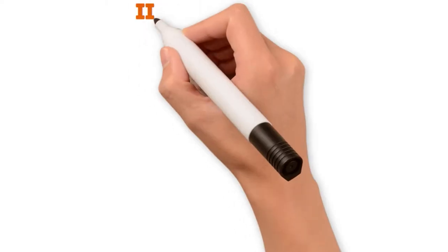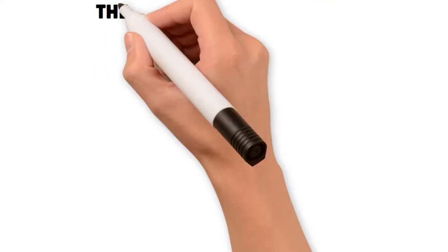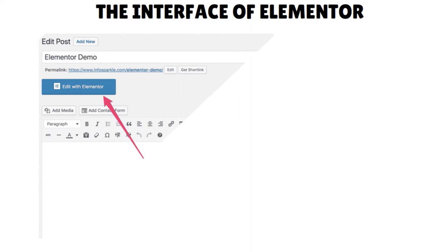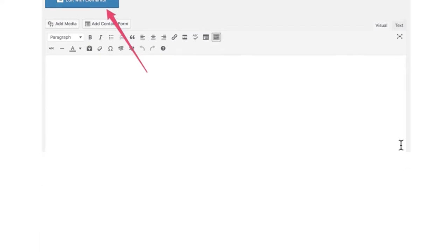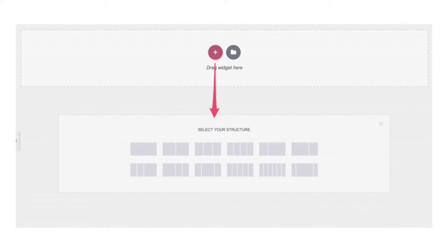Let's look at the first criteria: user interface. All three page builders come with front-end editing capabilities. In Elementor, when you create any WordPress post or page, the 'Edit with Elementor' button will appear below the title. Click that button and wait for the visual editor to load. In the Elementor window, clicking the plus button asks you to select the layout of the section. The folder icon lets you import from hundreds of Elementor templates and access saved templates.